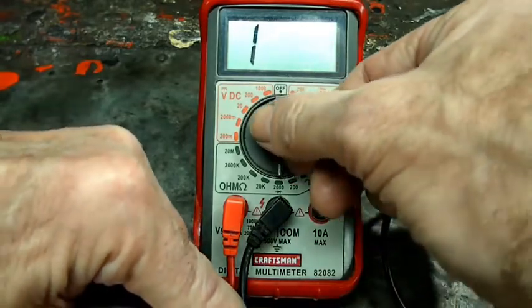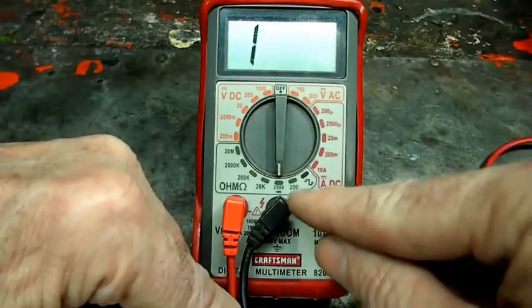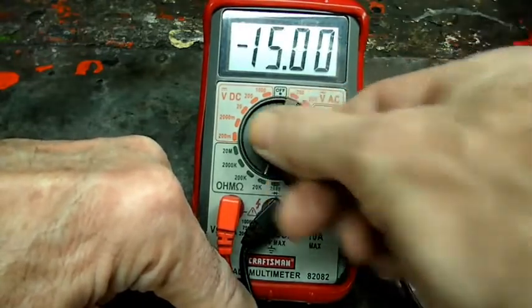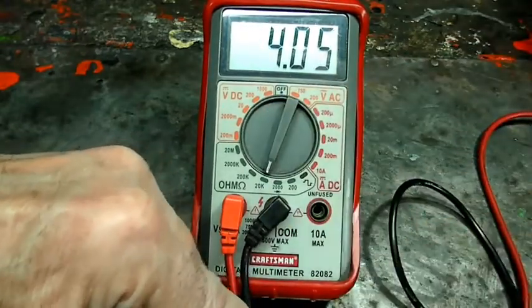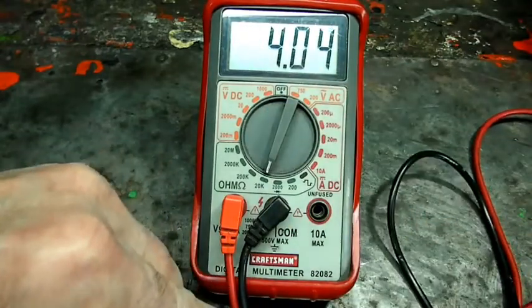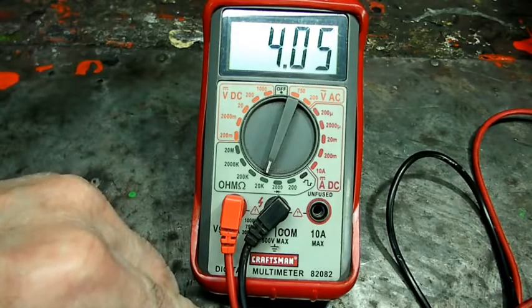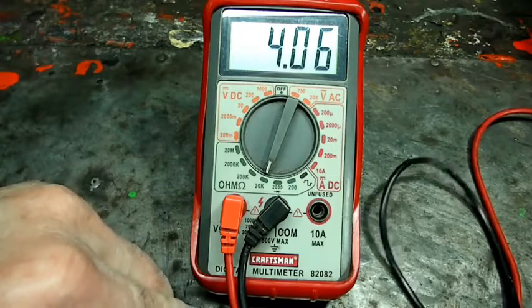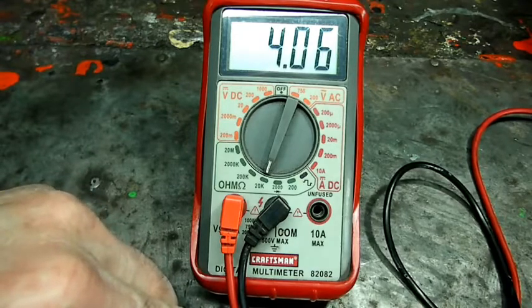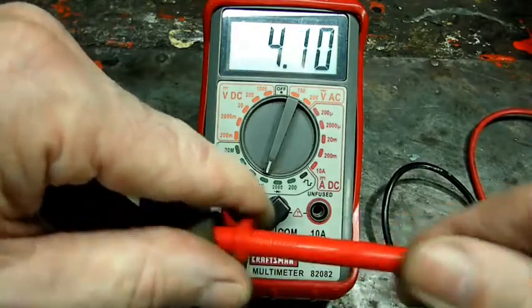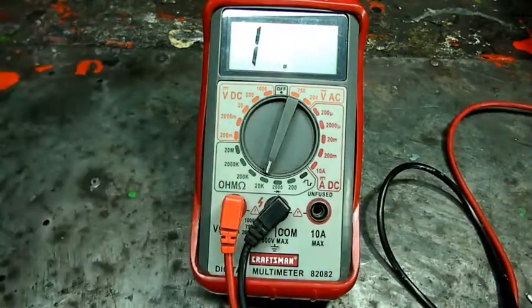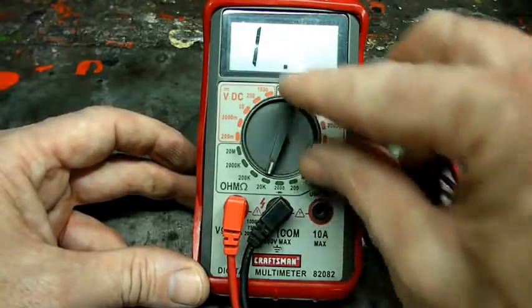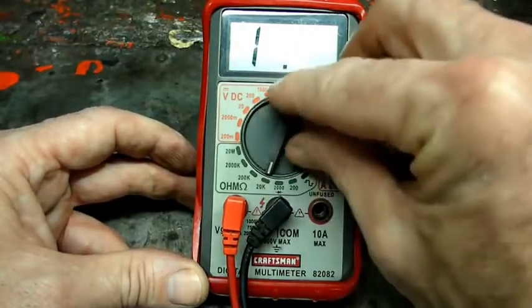So what we're going to do is go up one more. You can see it's on 2000, we're going to go to 20,000. And we should get a reading. There. This wire is reading around 4,000 ohms. So if you operate your meter and you see that one, just go up to the next highest reading.